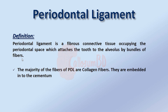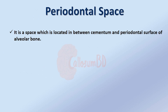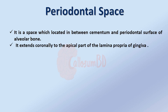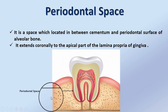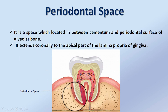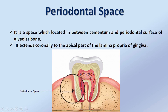The periodontal space is located between the cementum and the periodontal surface of alveolar bone. It extends coronally to the apical part of the lamina propria of the gingiva. The space between the alveolar bone and the periodontal surface of cementum is called the periodontal space.